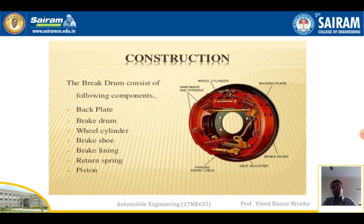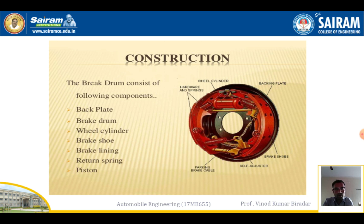If you explain the working of this drum brake system, it consists of seven major parts: the first is the back plate, second is the brake drum, third is the wheel cylinder, fourth is the brake shoe, fifth is the brake pad, sixth is the brake lining, and seventh is the return spring and piston. The whole brake mechanism is assembled inside a drum, hence it is called a drum brake, and it is fixed near to the wheel and tire.